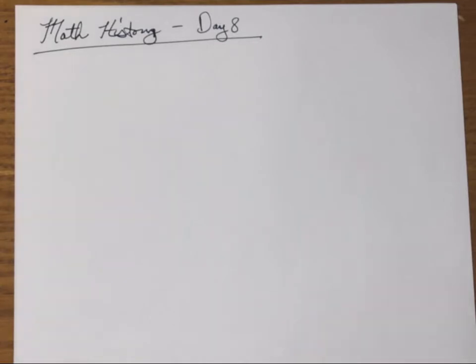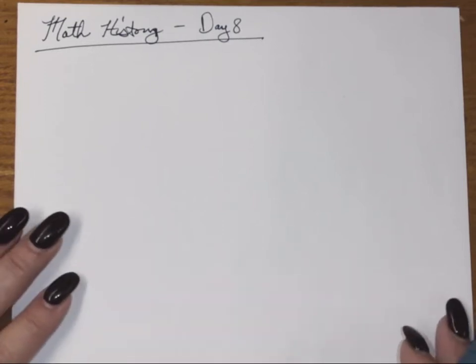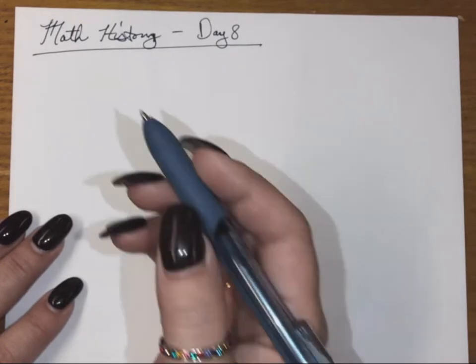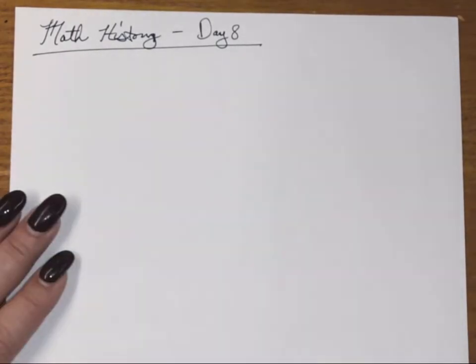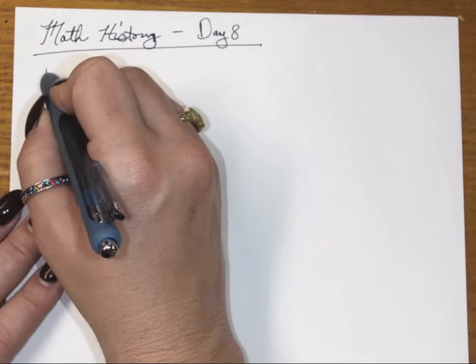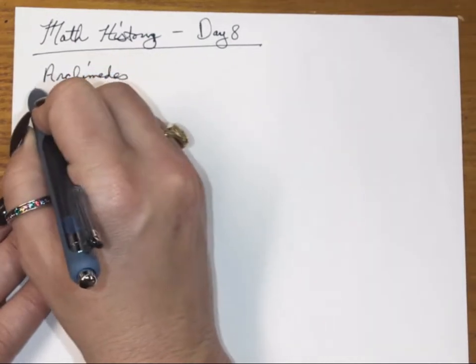All right, so we are entering into the downfall of the ancient Greek society. We've talked about Euclid and wrapped that up last time. So we have one more person who's kind of a big name and then a smaller name before the decline of the Greek Empire. We'll talk about that, and then what happens when war sets in.